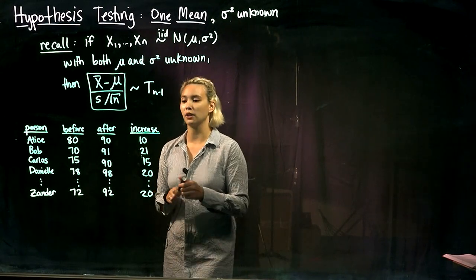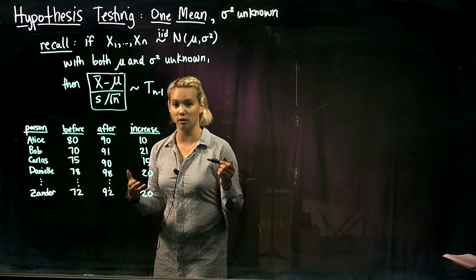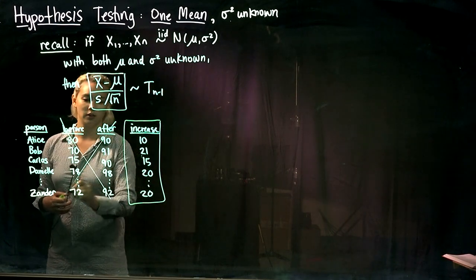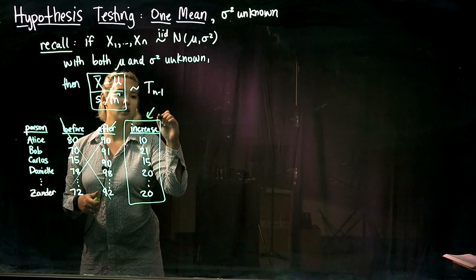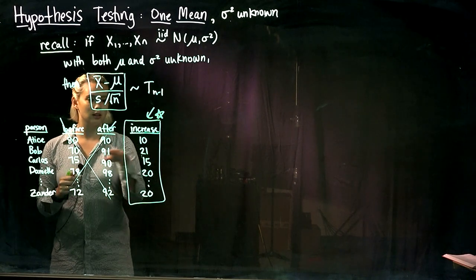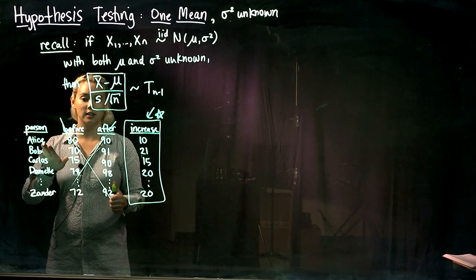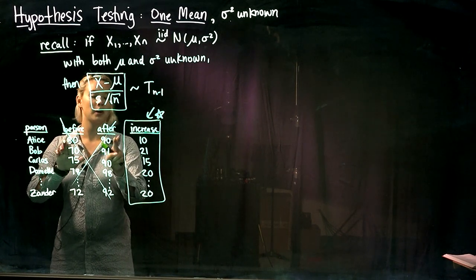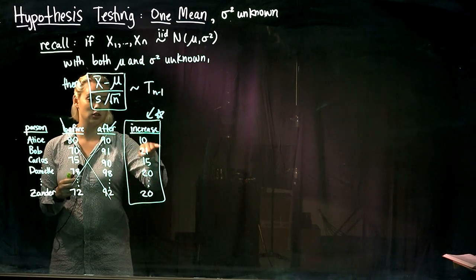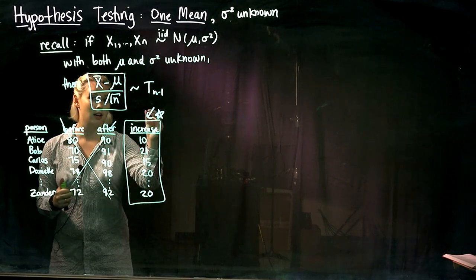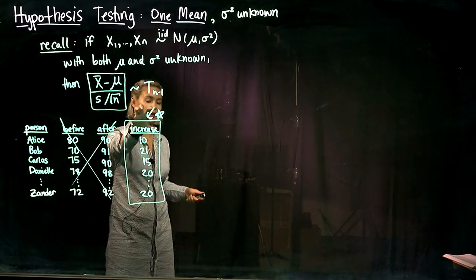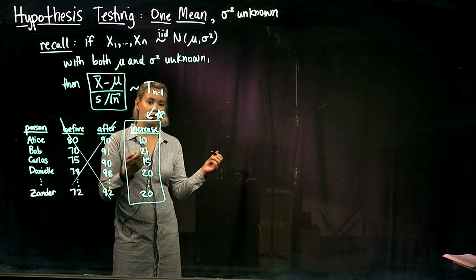So now we have this new variable which is just the increase or the improvement in their test score, and we can focus just on this one variable and pretty much forget about these other two variables and do all of our inference on just this one variable, the increase or the improvement in the test score. So we can do this subtraction here because we have paired data. Alice is paired with herself, her before score is paired with her after score, Bob's before score is paired with his after score and so on. So all we're interested in is essentially the difference there, so we can just focus on that improvement or that increase.